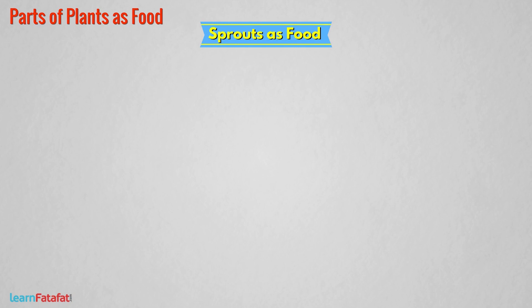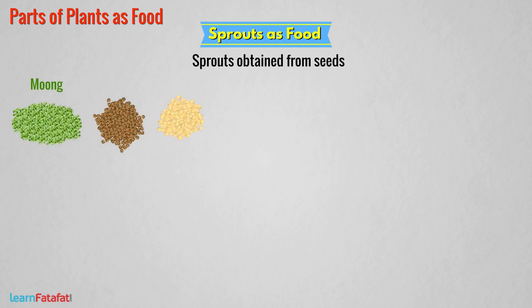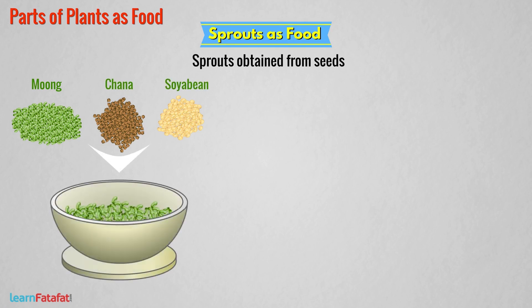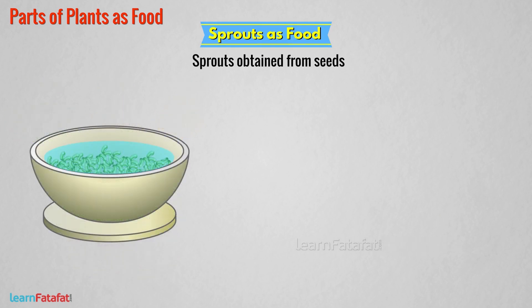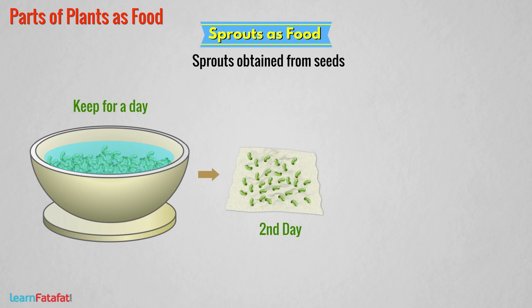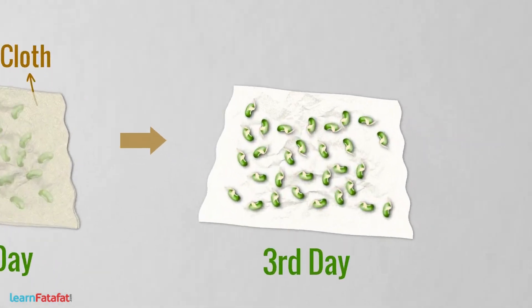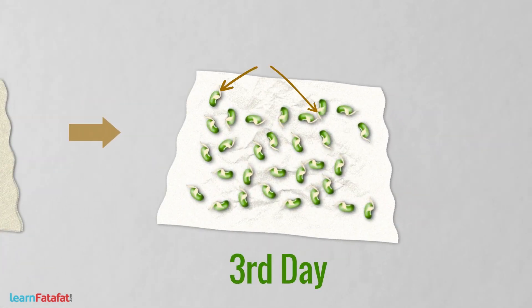We all eat food made from sprouts. Do you know how we obtain sprouts? These are basically obtained from seeds. The seeds of plants such as moong, chana, or soybean are kept in a vessel with a bigger opening. Put sufficient water in the vessel and keep it as it is for a day. The next day, remove the water completely from the vessel. Now put the seeds over a wet cloth and cover them with the cloth. After a day, you will see white structures coming out of the seeds.